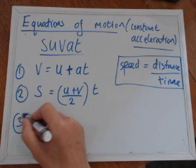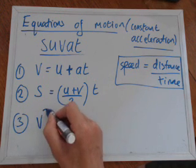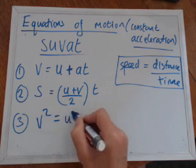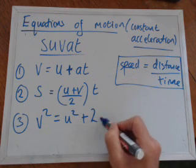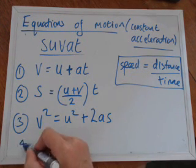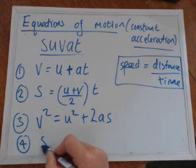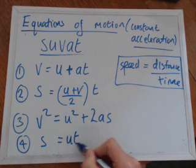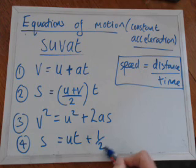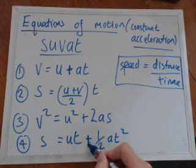Number three: V squared equals U squared plus 2AS. And number four is S equals UT plus a half AT squared.